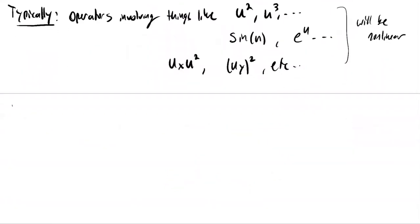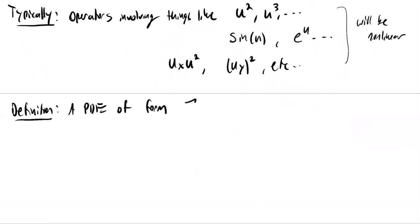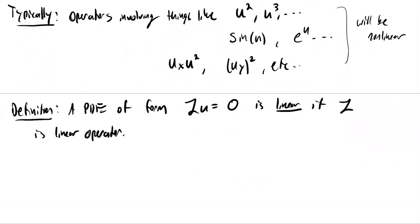A PDE of the form L(U) equals zero is called linear if L is a linear operator in the sense just described. Otherwise the equation is called a nonlinear partial differential equation.